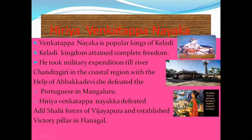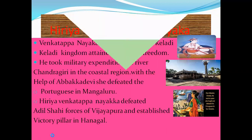Iriya Venkatappanayaka defeated the Adil Shahi — one of the Bahmani Sultanate dynasties — and established a victory pillar in Vijayapura. He established it at Anagal. After Iriya Venkatappanayaka, Shivapanayaka came to rule from 1645 to 1660 CE.